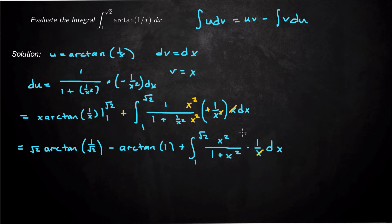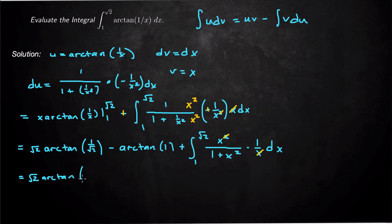Now evaluating: arctangent of 1 is π over 4. But arctangent of 1 over square root of 2 — that's actually a trick, because if it were arcsine or arccosine of 1 over square root of 2 that would be a standard value, but we don't have a specific value for arctangent of 1 over square root of 2, so we just leave it. This gives us square root of 2 times arctan(1 over √2) minus π over 4.